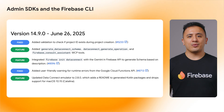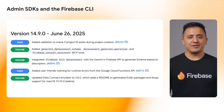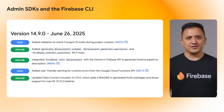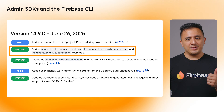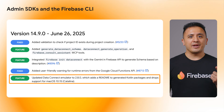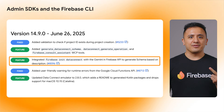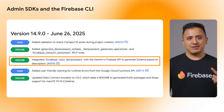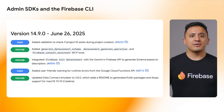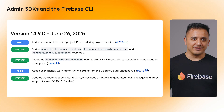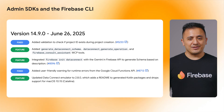Finally, version 14.9.0 and later of the Firebase CLI has a ton of new Data Connect features, including new MCP tools, Data Connect Emulator updated to version 2.8.0, and integration of Firebase Init Data Connect with the Gemini in Firebase API to generate schema based on a description. Note: this version also drops support for macOS 10.15 Catalina. And that's it for server-side SDKs.